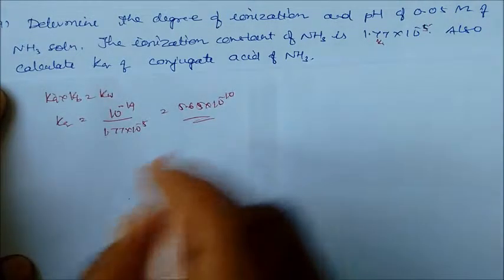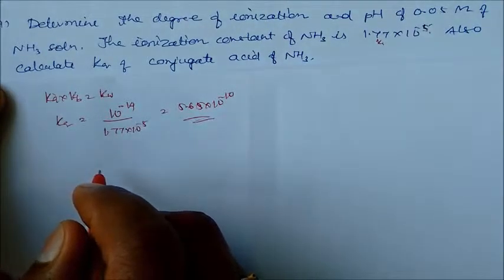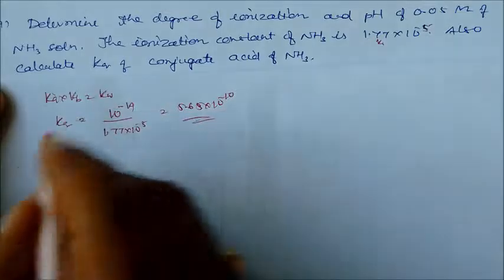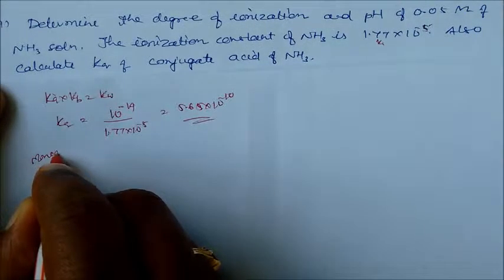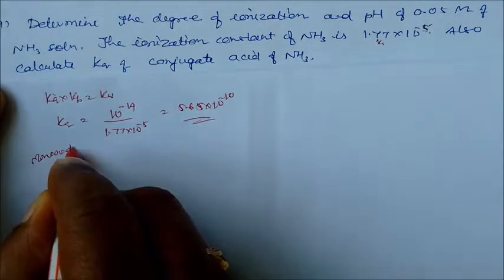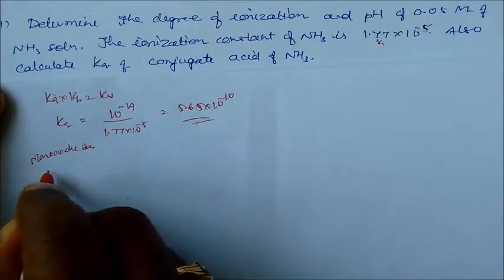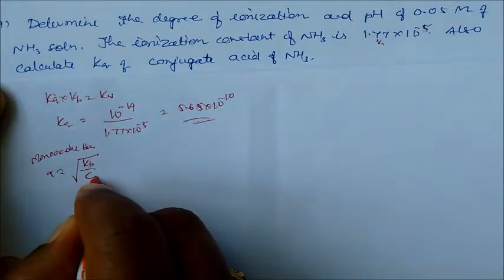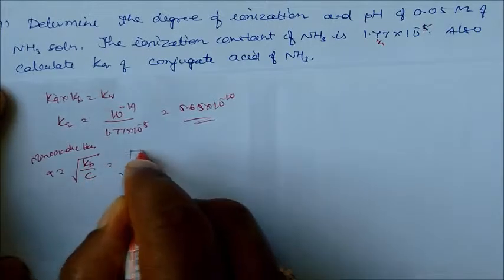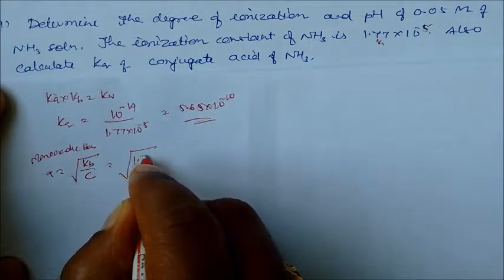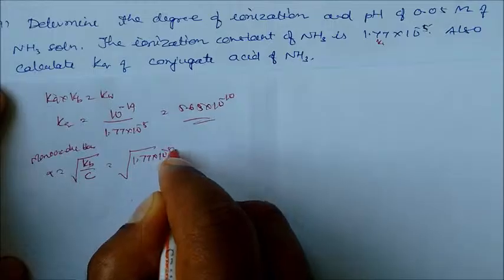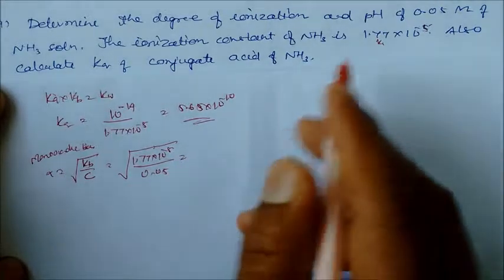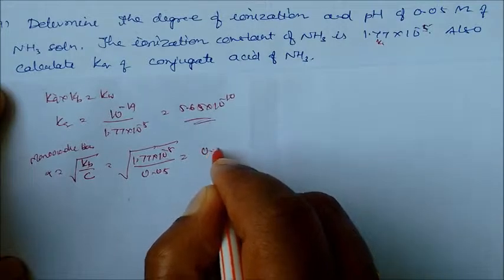Now for the degree of ionization: ammonia is a monoacidic base. We can write alpha = √(Kb / C). Kb is 1.77 × 10⁻⁵ and C is 0.05. On solving, the degree of ionization is 0.0188.